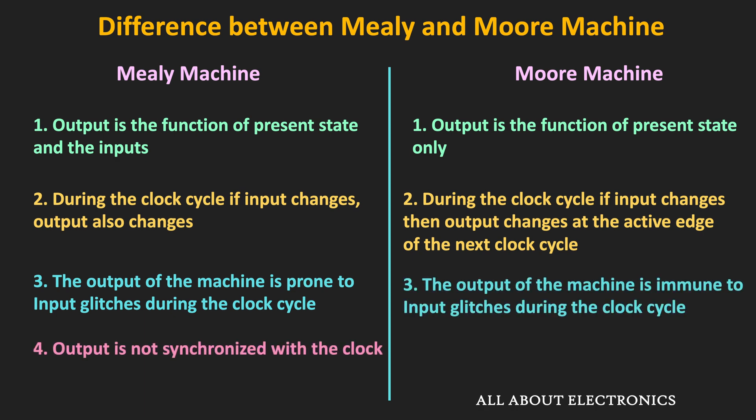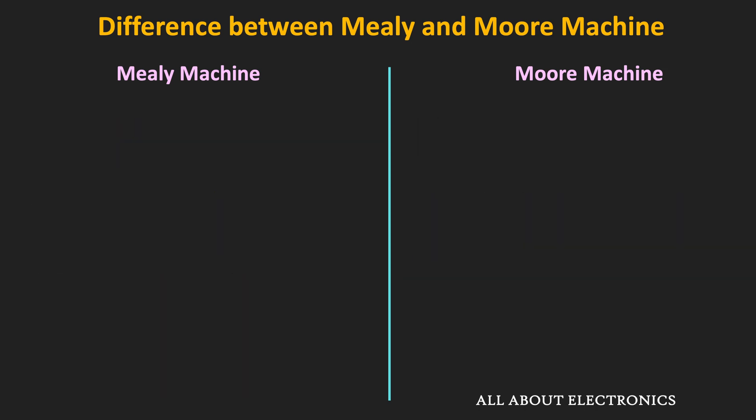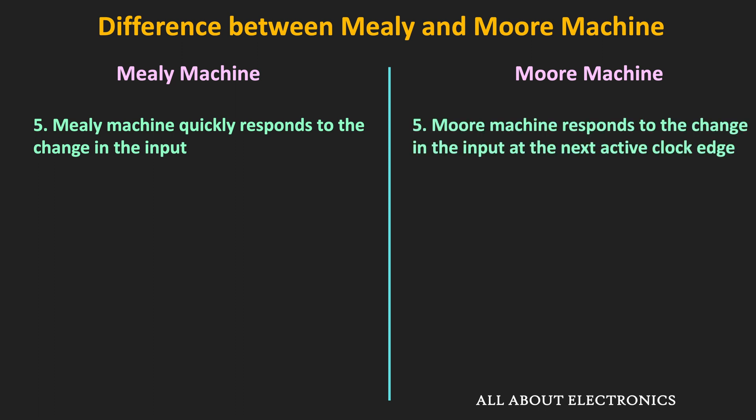In the Moore machine, since the output is a function of the present state of the memory element, the output changes at every clock edge. So the output of the Moore machine is synchronized with the clock signal, while in the Mealy machine that is not the case. The Mealy machine responds immediately to a change in input, while the Moore machine's response is delayed — it responds to input changes at the next clock edge.